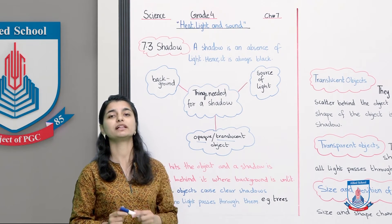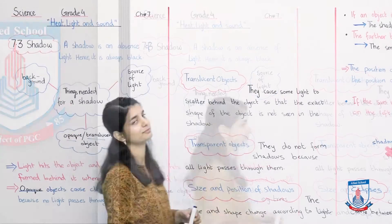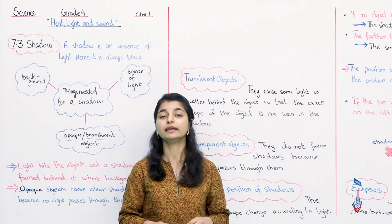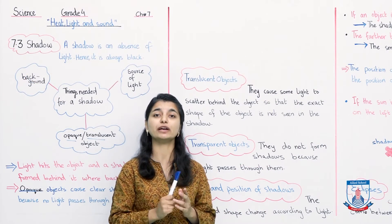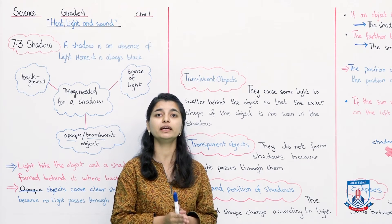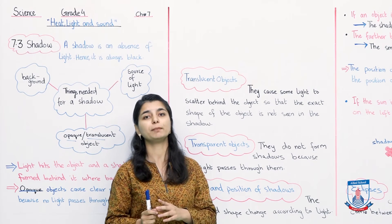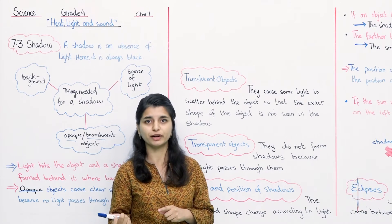You can see here an image of a shadow formed behind a tree. The light falls on the tree and a clear shadow is formed behind it.